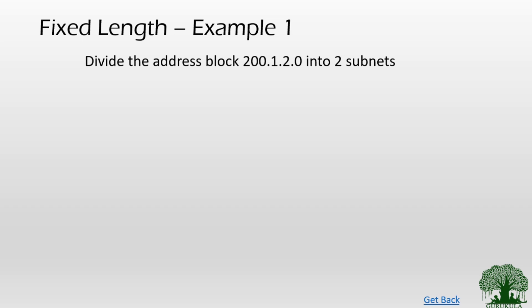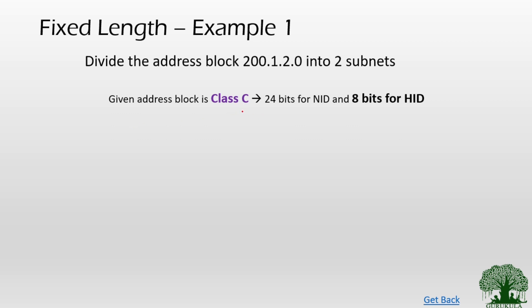Given an address block starting with 200.1.2.0, you are expected to divide this address block into two subnets. The first step is to identify which class this address block belongs to. Looking at the first byte — 200 — the given address block is a Class C address. In Class C, 24 bits are allocated for network ID and 8 bits are allocated for host ID.